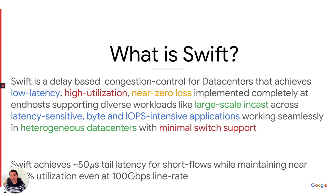So what is Swift? In one line, albeit a long one, Swift is a delay-based congestion control for data centers that achieves low latency, high throughput, near zero loss, implemented completely at end hosts, supporting diverse workloads like large-scale incast across latency-sensitive, byte, and IOPS intensive applications, working seamlessly in heterogeneous data centers with minimal switch support.